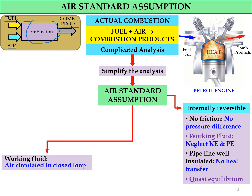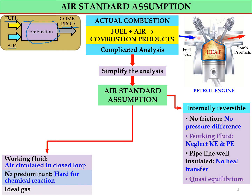In the air standard assumption, we also assume that the air is circulated in a closed loop — meaning the inlet goes to the outlet and the outlet goes back to the inlet. Since the combustion product is predominantly nitrogen, and nitrogen undergoes no chemical reaction during combustion, the air is treated as an ideal gas.